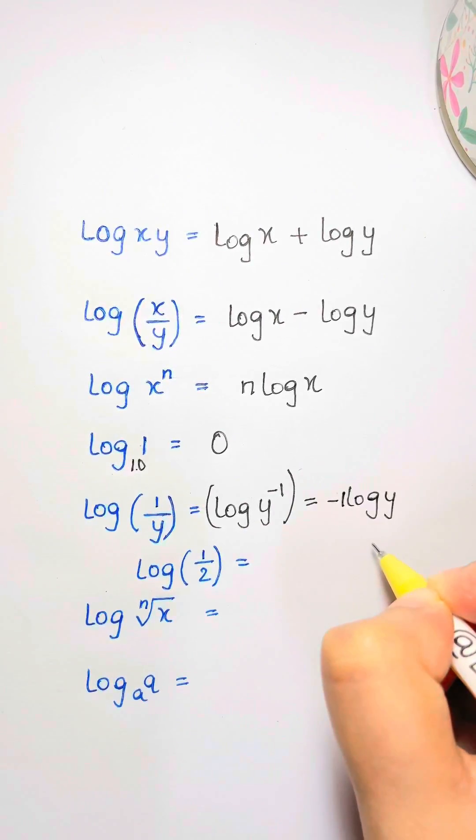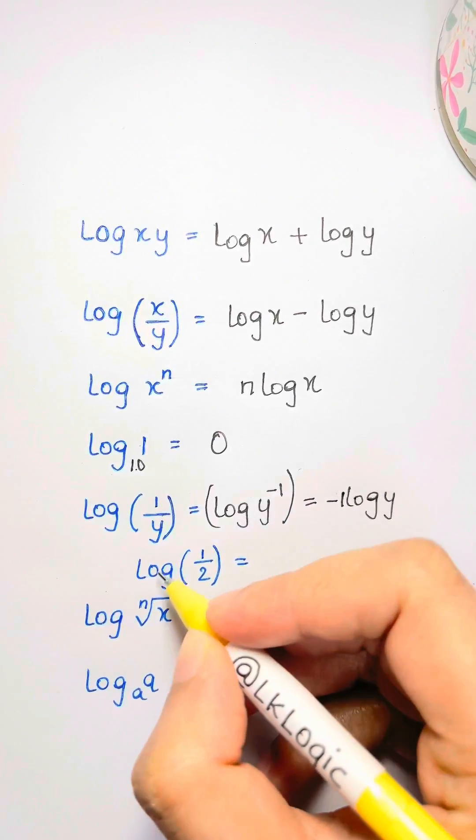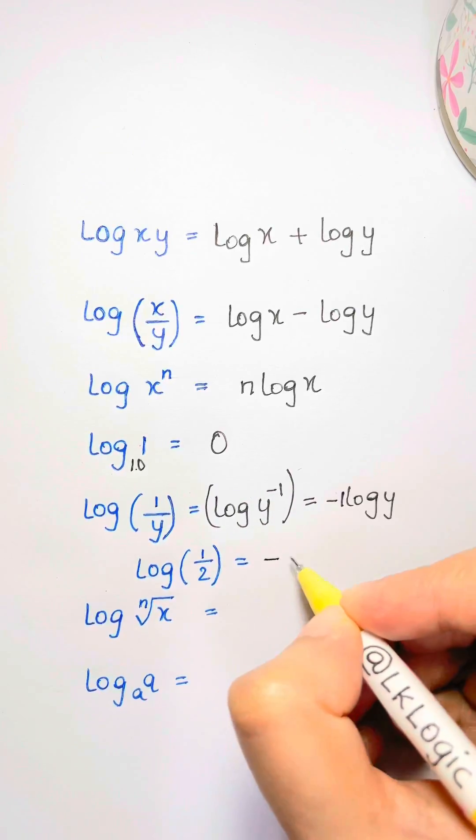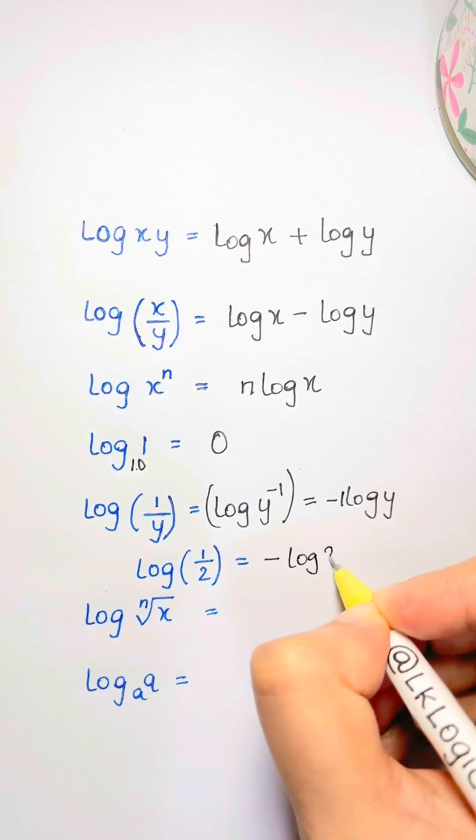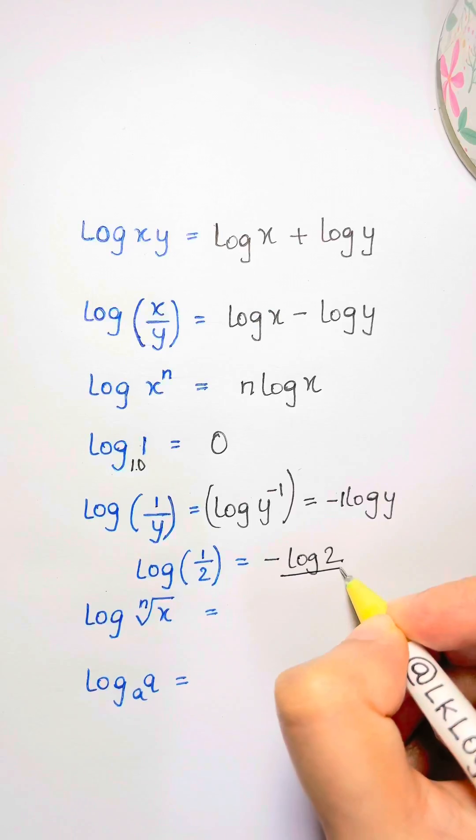So for example, we're going to see a lot of these log of half. So you don't need to do the intermediate steps here. It can directly say it's minus log two.